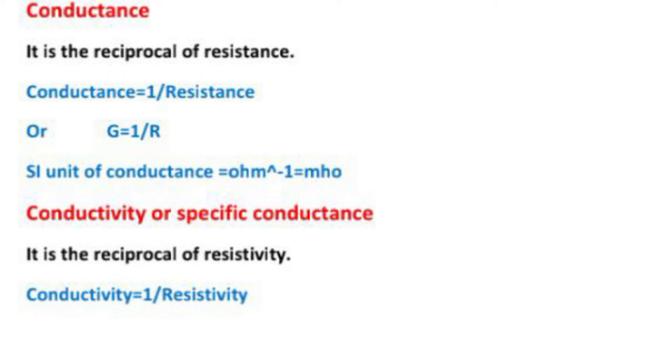Now moving further to drift velocity and relaxation time. What is drift velocity? The average velocity acquired by free electrons of a conductor in the opposite direction of the externally applied electric field is called drift velocity.